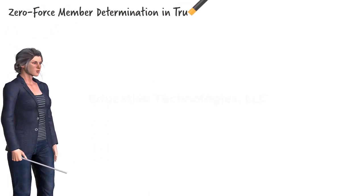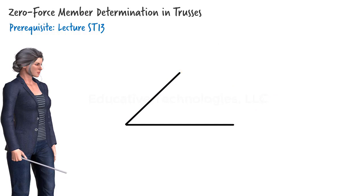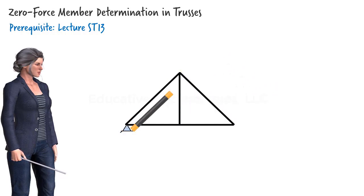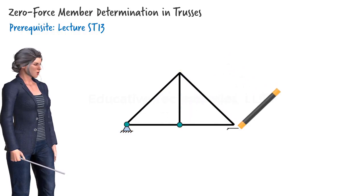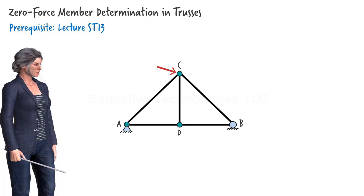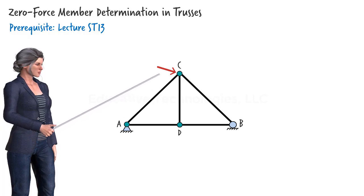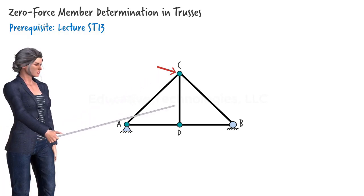In lecture ST13, we introduced the method of joints for analyzing determinate trusses. We learned that truss members carry tensile and compressive forces only. Interestingly, in a typical truss structure, depending on its geometry and the location of the applied load, some of the members may carry no axial force. We call them zero force members. For example, in this truss, if the only load on the structure is located at joint C, CD becomes a zero force member.